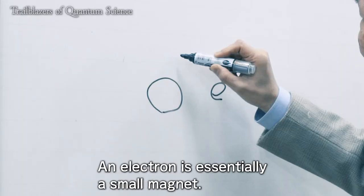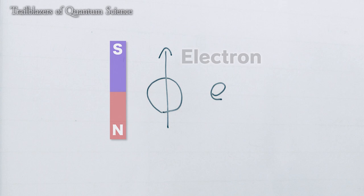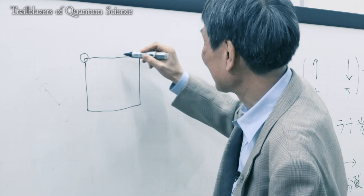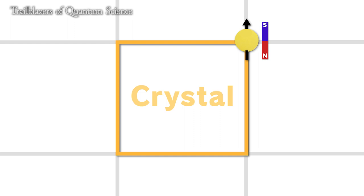Electrons have a magnetic property called spin. Here is what occurs when electrons are cooled. Electrons form a neat alignment of alternating upward facing and downward facing spins, which then stop moving.